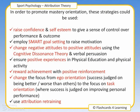In order to promote mastery orientation, the following strategies could be used: raise confidence and self-esteem to give a sense of control over performance and outcome; employ SMART goal setting to raise motivation; change negative attitudes to positive attitudes using cognitive dissonance theory and verbal persuasion; ensure positive experiences in physical education and physical activity; reward achievement with positive reinforcement; change the focus from ego orientation — where success is judged on being better or worse than other people — to task orientation, where success is judged on improving personal performance.